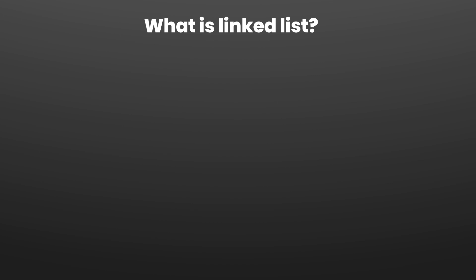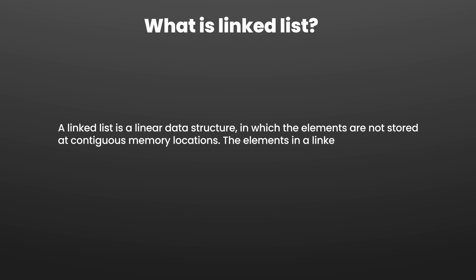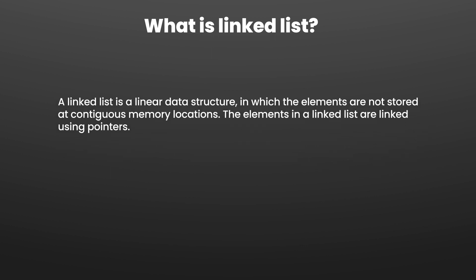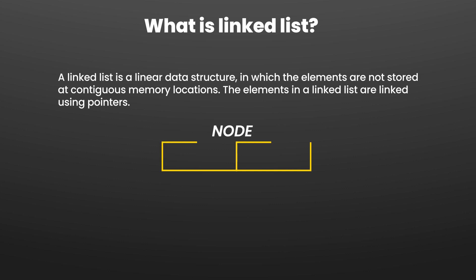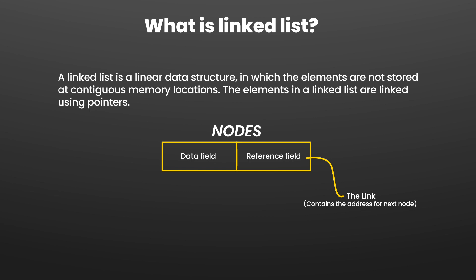So let's start off with what linked lists are. By definition, a linked list is a linear data structure in which the elements are not stored at contiguous memory locations; rather they are stored with reference to the memory locations. The elements inside a linked list are linked using pointers. In simple words, a linked list consists of nodes where each node contains a data field and a reference field. This reference field is often called the link, and it contains the address of the next node.